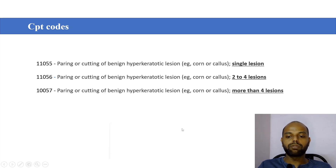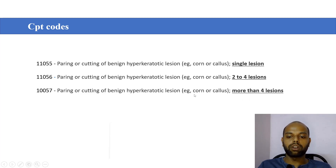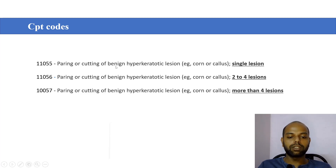When a provider removes a single lesion of corn or callus we have to code CPT 11055. When the provider removes 2 to 4 lesions of corn or callus we have to bill CPT 11056. When the provider removes more than 4 lesions of corn or callus we have to code 11057. CPT 11057 — the description is paring or cutting of benign hyperkeratosis. Benign means not cancerous in nature, and the best examples of hyperkeratosis are corn and calluses.